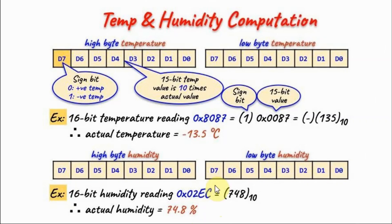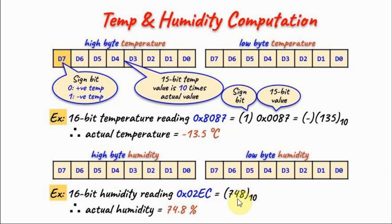The humidity value is represented by a 16-bit number, with a low byte and a high byte. As an example, a 16-bit humidity reading given by a hex value translates to decimal 748. Again, this value is 10 times the actual value, so we divide by 10 and get the actual humidity: 74.8%.